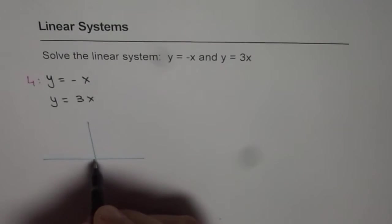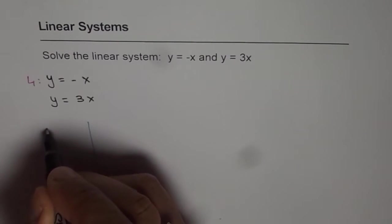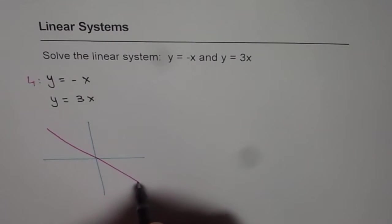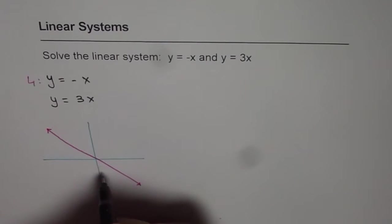Will be a line which will divide these two quadrants 2 and 4 diagonally. So that is y equals minus x.